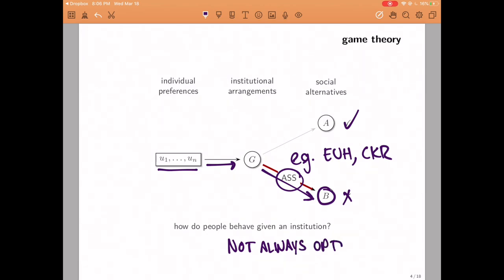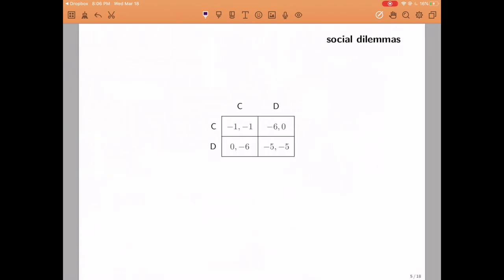So the behavior of individuals, even if it's optimal from an individual perspective, it's not always going to be optimal from a social perspective. Situations where this happened are called social dilemmas. And perhaps the most famous social dilemma is the so-called prisoner's dilemma, which, by the way, you can read about it on Wikipedia or just Google it. There's tons of information.